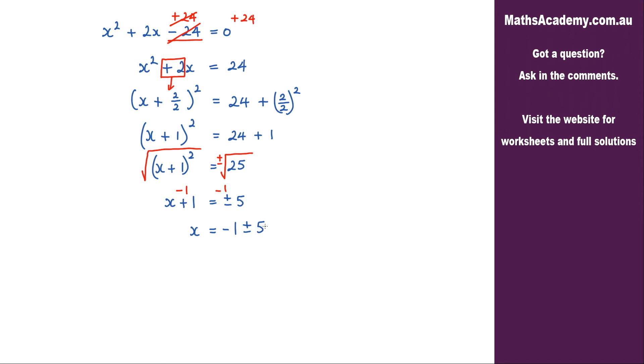Now obviously we're going to get 2 answers from this. We're going to get x equals minus 1 plus 5 and x equals minus 1 minus 5. In this case x is going to be equal to 4 and in this case x is going to be equal to negative 6.